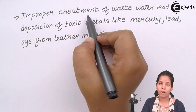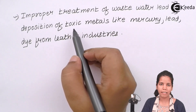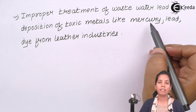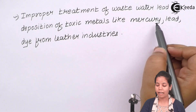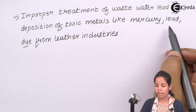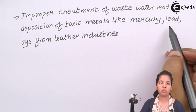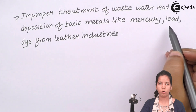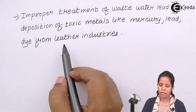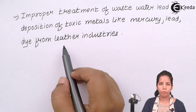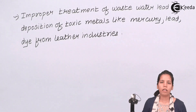Waste water added to water bodies contains toxic metals like mercury — the same mercury present inside a thermometer used to check our temperature. Lead, released by chemical and pharmaceutical industries as a waste product, is also added to water bodies without treatment. Dye, which gives color to our clothes, bags, or shoes, has its by-products directly added to water bodies.